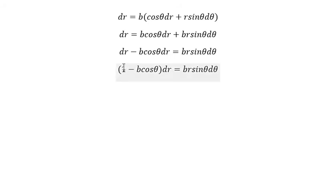Next, we divide both sides with this one and we divide with r in here, so we got our bound. dr over r equals to b sin θ dθ over 1 minus b cos θ.